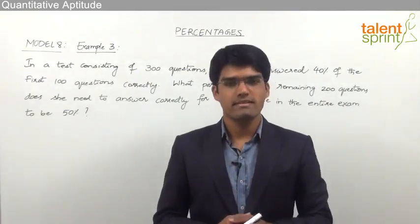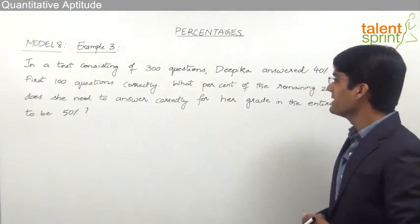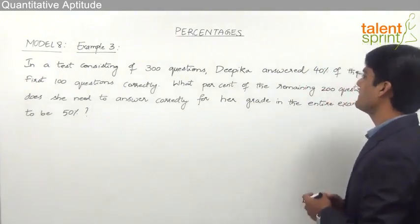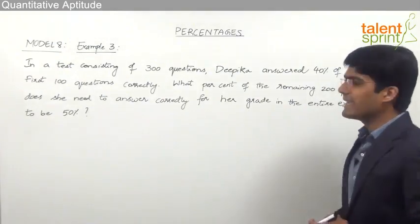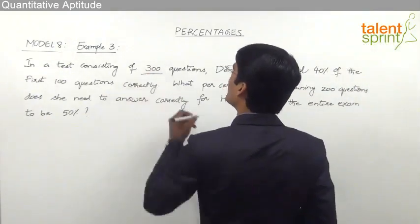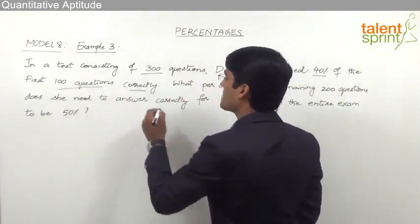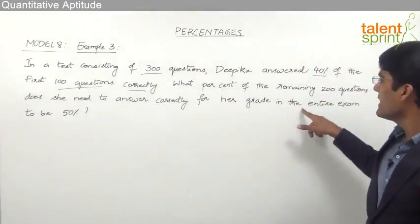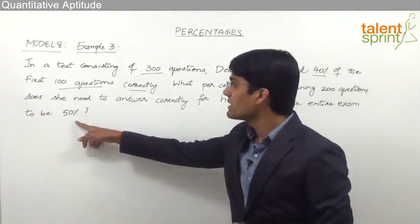Let us take one more interesting question. In a test of 300 questions, Deepika answered 40% of the first 100 questions correctly. What percent of the remaining 200 questions does she need to answer correctly for her grade in the entire exam to be 50%? That means overall she has to answer 50% of questions correctly.